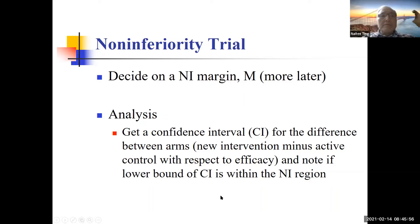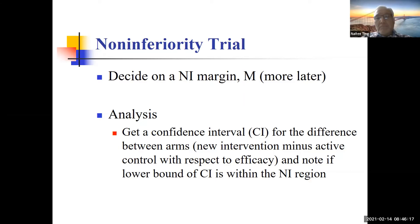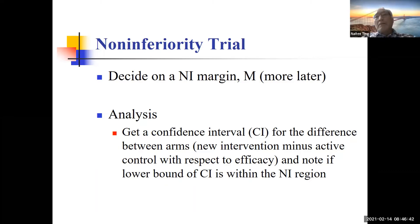You need to show the new intervention is no worse than active control. Decide on a non-inferiority margin, then obtain a confidence interval for the difference between the two arms — new intervention minus active control. Note whether the lower bound of the confidence interval is within the non-inferiority margin. Remember it's a one-sided confidence interval. If positive is better, you're always looking for the lower confidence interval limit of test drug minus active control to be above the margin.